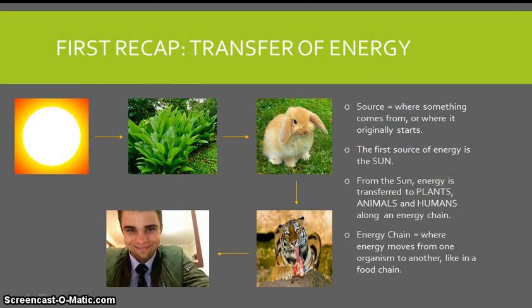Now, the source is where something comes from, where it originally starts. So the first source of all of our energy is the sun. From the sun, energy is transferred to plants, to animals and to humans along an energy chain. An energy chain is where energy moves from one organism to another, like in a food chain.